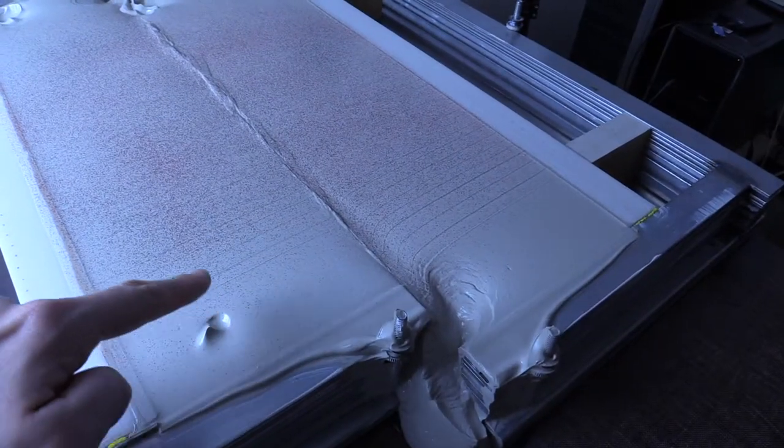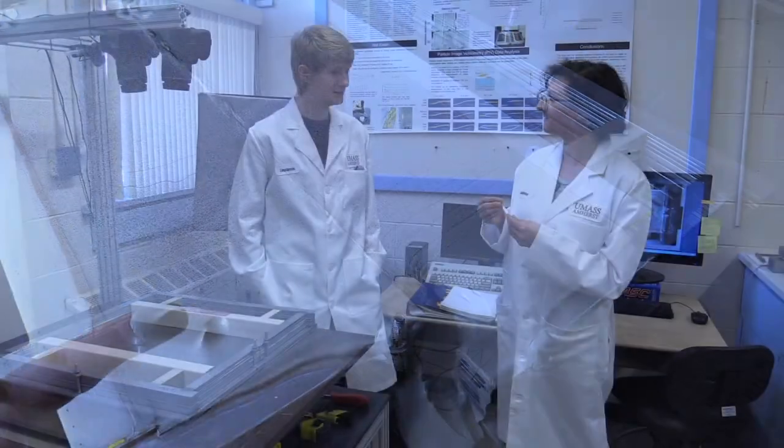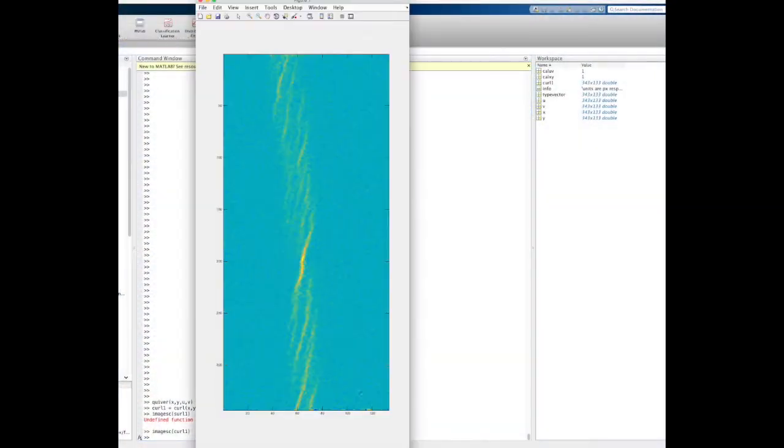So you can grow faults in something that's the consistency of yogurt? Yeah, so we can actually see little fractures and then slip along those fractures and create faults.